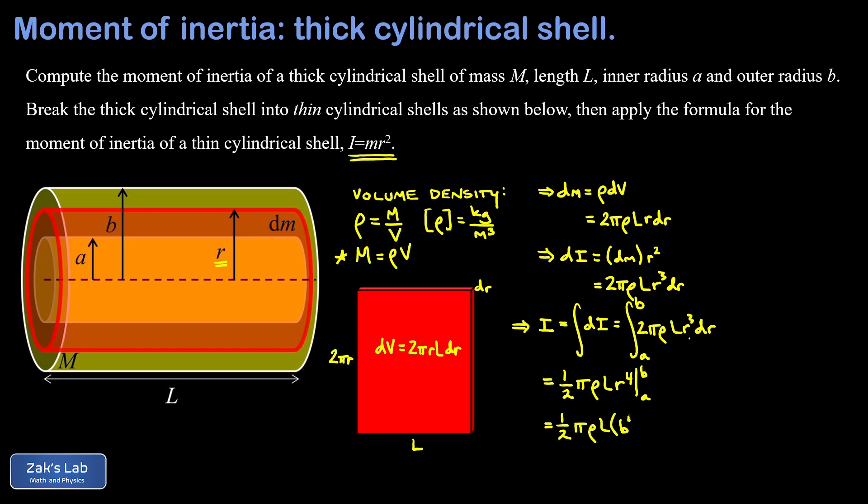This is the total moment of inertia for this object, but the form of the solution isn't desirable here. We don't want to have this expressed in terms of a density. We would like to get the moment of inertia entirely in terms of the mass and dimensions of the thick cylindrical shell, so we need to eliminate that density term.